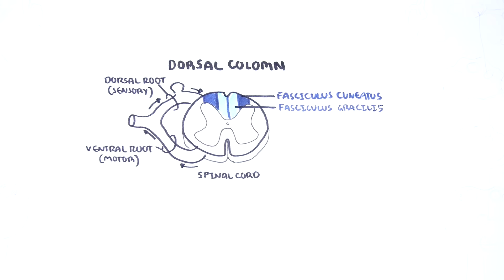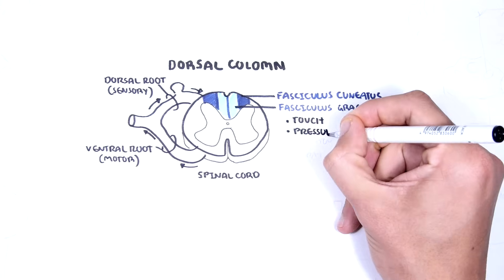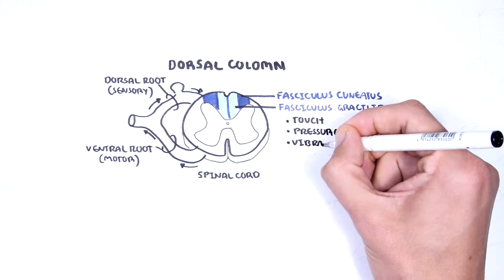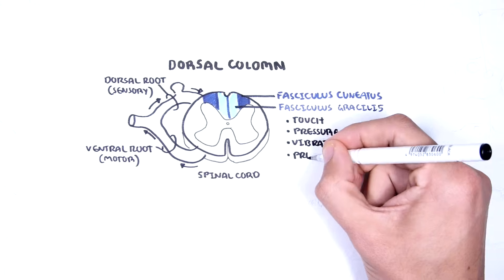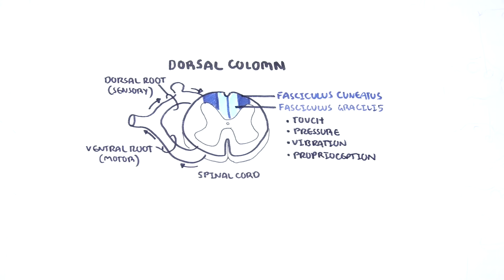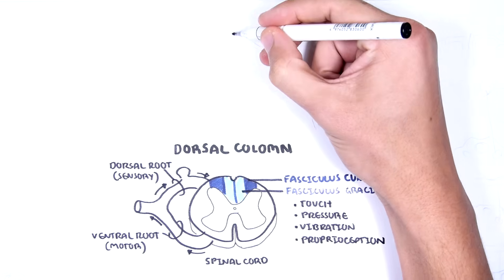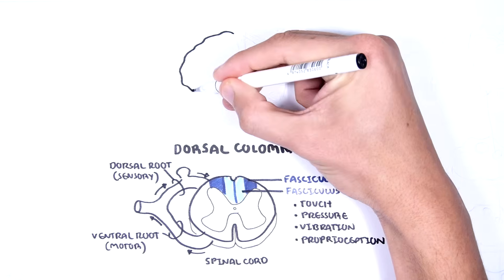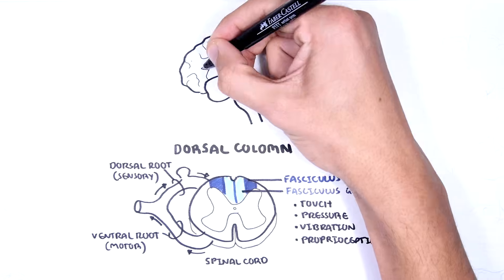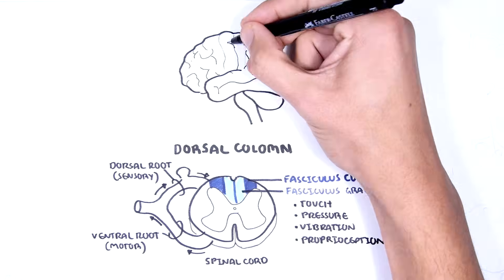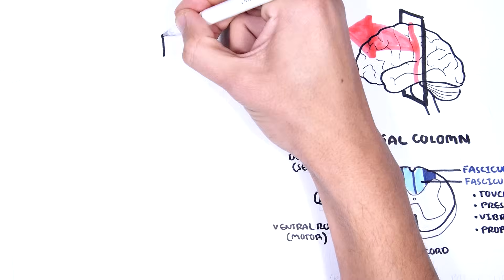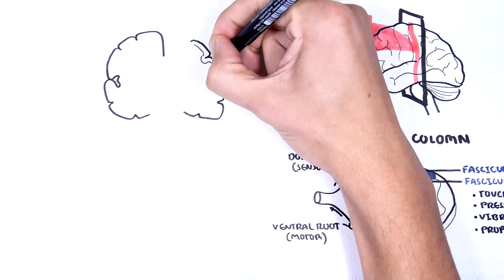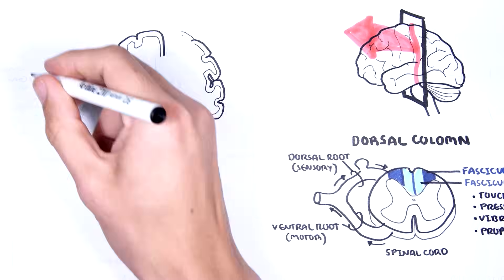The dorsal column tracts are responsible for carrying sensory information on touch, pressure, vibration, and proprioception to the somatosensory cortex in the brain. The somatosensory cortex is where the somatic sensory information is perceived.